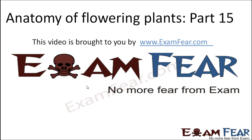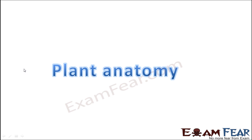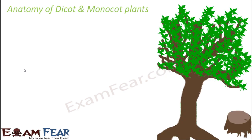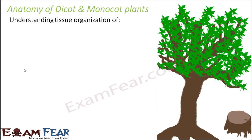Hello friends, this video on anatomy of flowering plants part 15 is brought to you by examfear.com — no more fear from exam. Now we have enough knowledge to understand plant anatomy, that is, the exact structure of different plant parts. Dicot and monocot plants vary in their internal structure, so we will talk separately about each. Our aim is to understand the tissue organization of root, stem, and leaf.